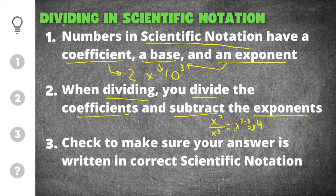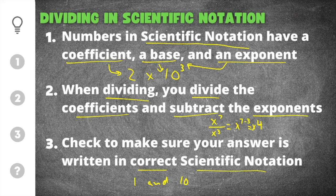Your base will always be 10, and you'll always subtract the exponents. After you've divided, you need to check that your answer is written in correct scientific notation, because the coefficient may not be between 1 and 10. The coefficient must be between 1 and 10, and if it's over 10 or less than 1, you have to move the decimal point to make it correct scientific notation.